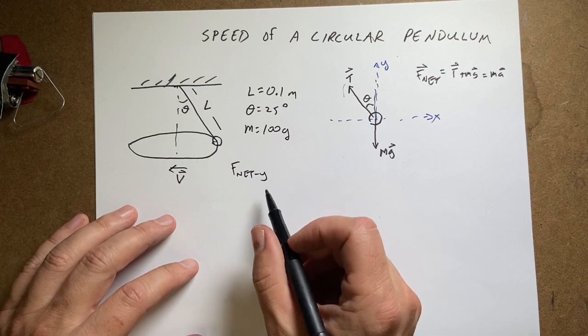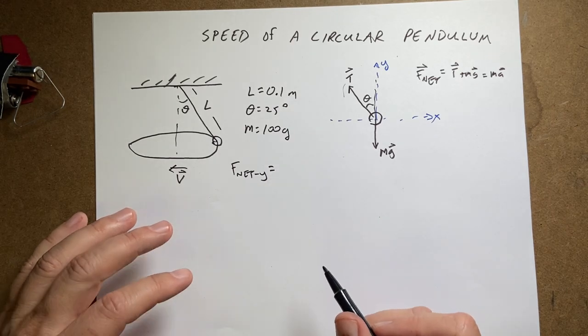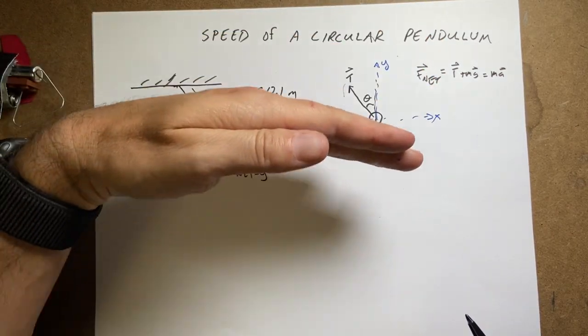So I can write F net in the y direction, just a y component. If I wanted to write F net, it would be like this. F net equals T plus mg equals ma as vectors. But that's not very useful. If I break it into the x and y direction, I can say the net force in the y direction has to be zero, right? Because it's not accelerating.